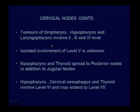Tumors of the oropharynx, hypopharynx, and laryngopharynx spare level 1 but involve all jugular chains — upper, middle, and lower — that is level 2, level 3, and level 4. Isolated involvement of level 5 is unknown. For oropharynx, hypopharynx, or laryngopharynx tumors, skip metastasis is generally not found.